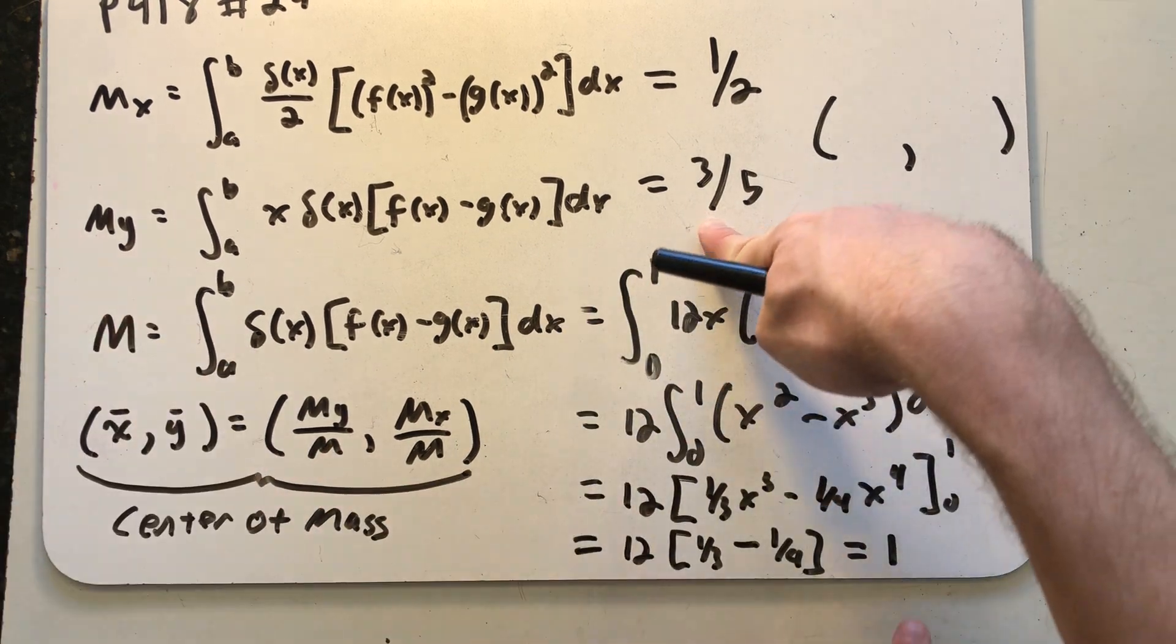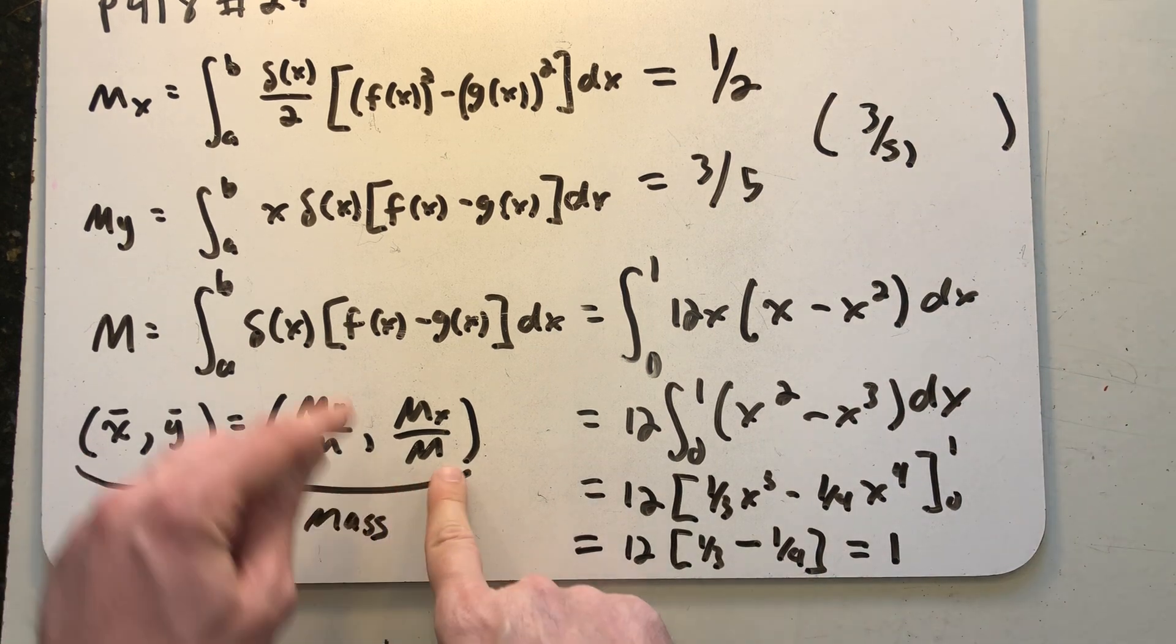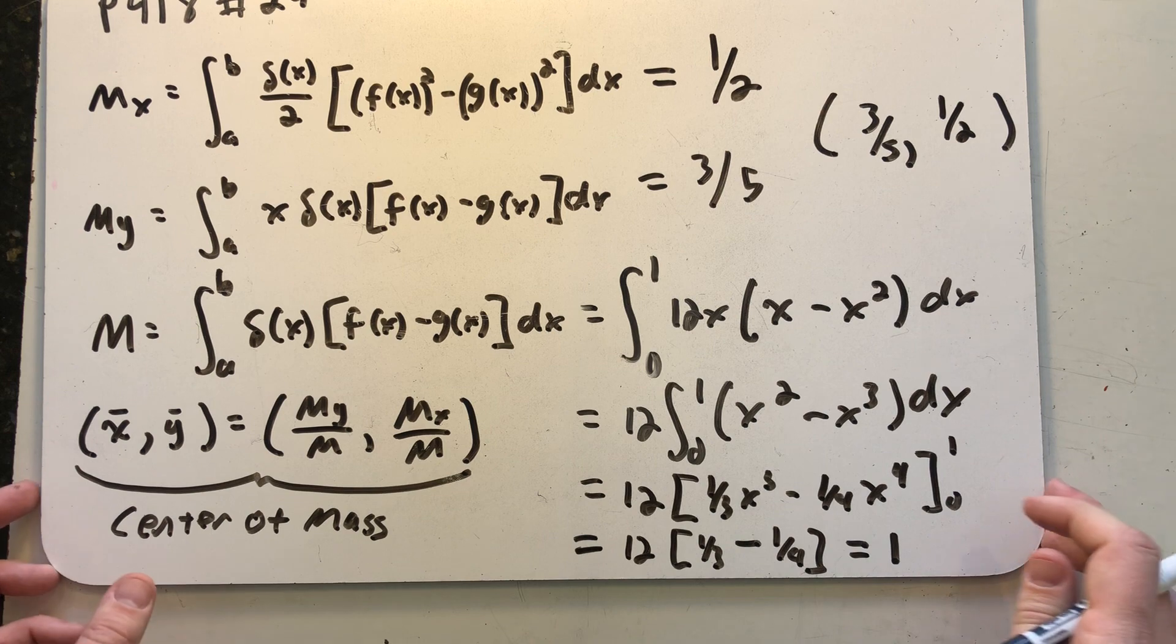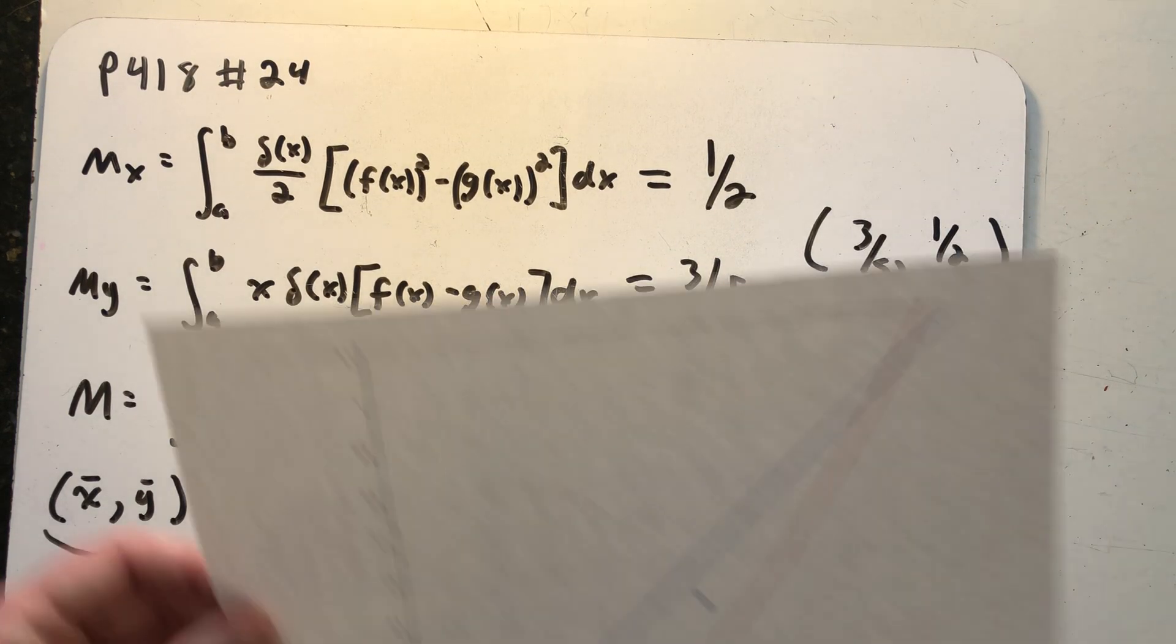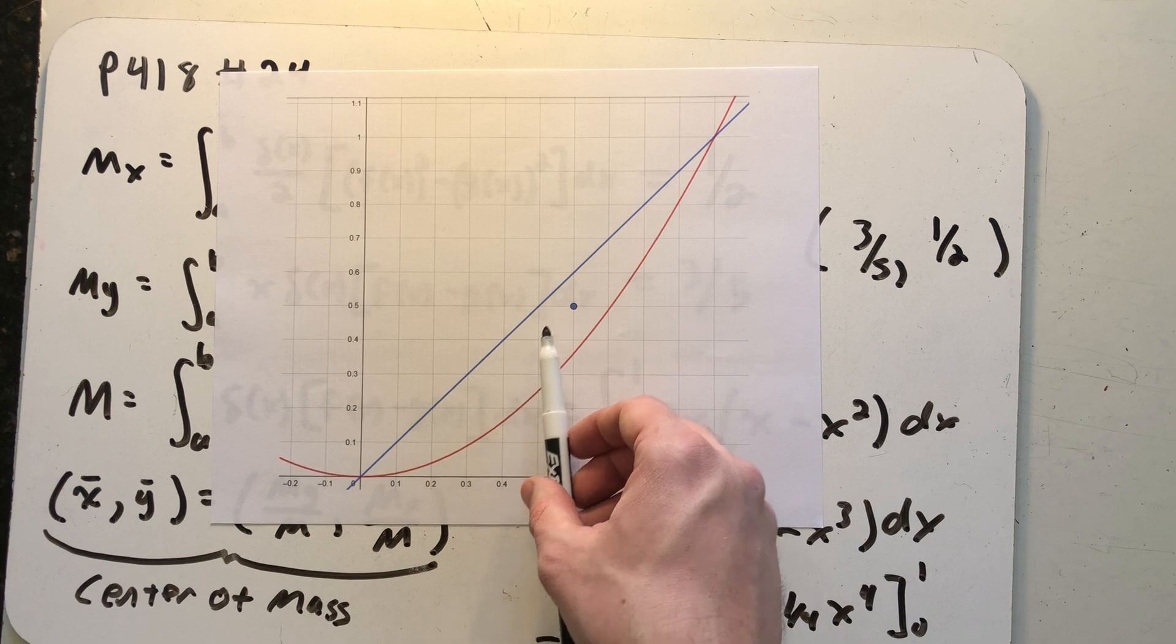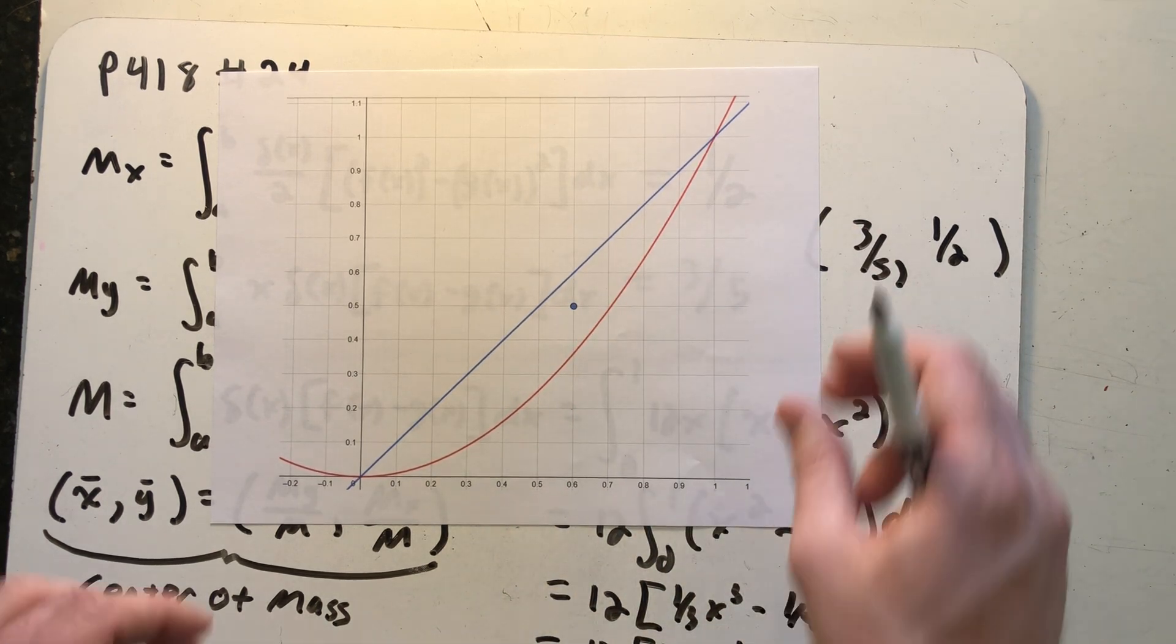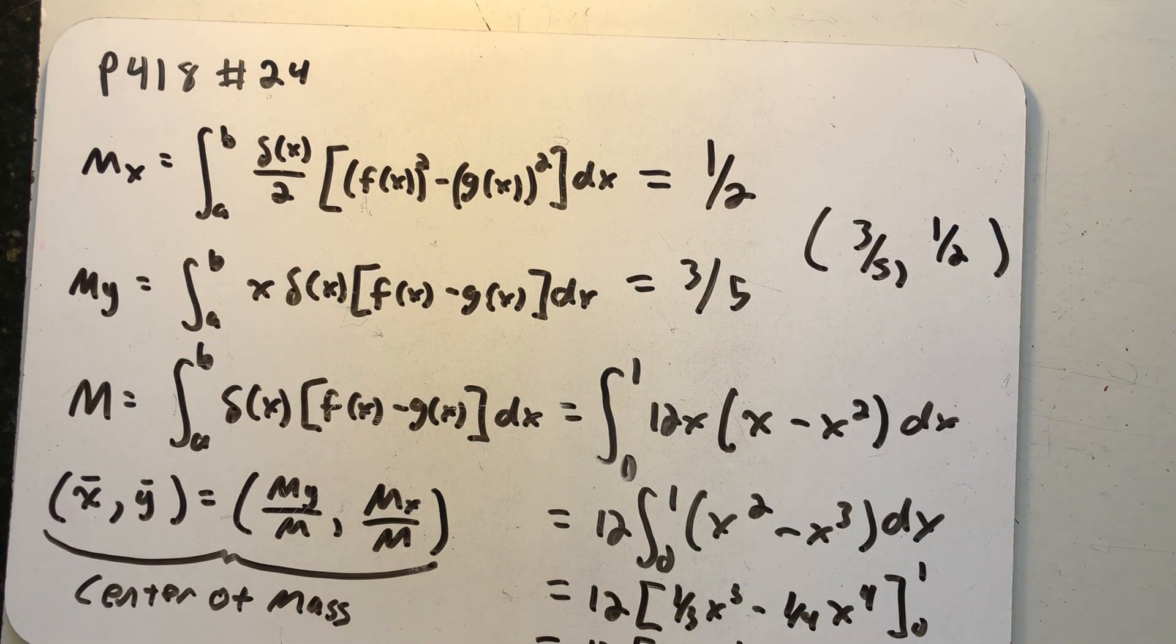M sub y three fifths over one is three fifths. M sub x over m one half over one is one half. We found our center of mass and it is where we thought it would be pulled from right in between to where the higher density part of this thin region is. And there we have it finding the center of mass of that thin planar region.